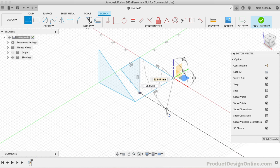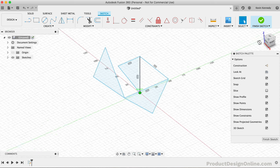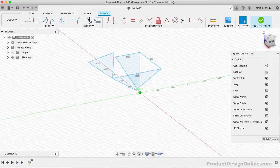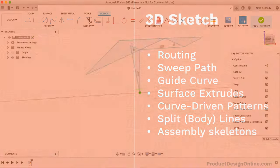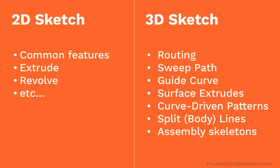Knowing when to use a 3D sketch instead of a 2D sketch can make all the difference. In short, you'll want to use a 3D sketch to create a path for tubing, sweeps, lofts, or surface edges when the design continues to multiple planes. Contrary, 2D sketches should be used for common features like Extrude and Revolve.